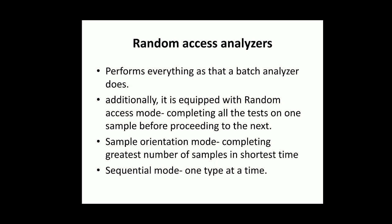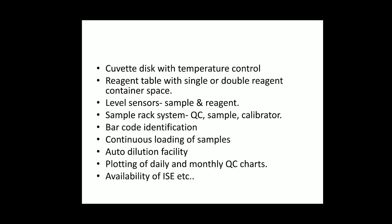The random access analyzer completes all tests of one sample before proceeding to the next — this is called random access mode. A sample orientation mode is also available, allowing a greater number of samples in a shorter time. A sequential type — one type at a time — is also available. All these features are present in the fully auto analyzer.